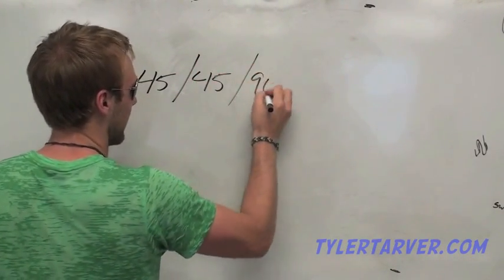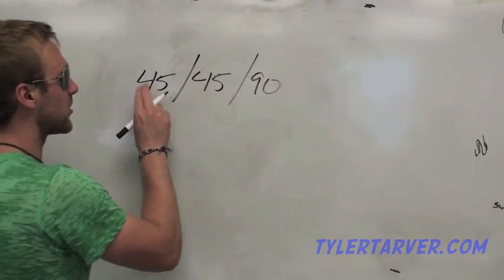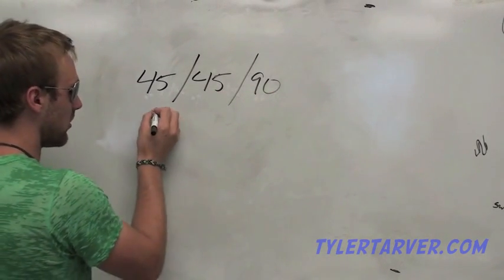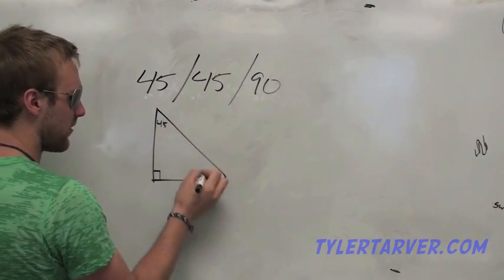All right, 45, 45, 90. That's our first special right triangle. It means that the angles are 45, 45, and 90, obviously, seeing as how it's a right triangle. Now, you've got a right angle, that has to be 45, and that has to be 45.